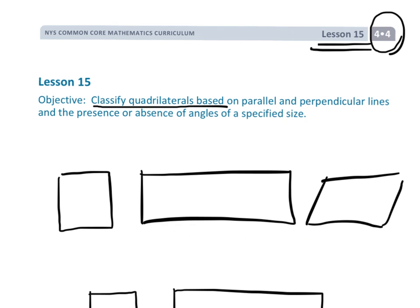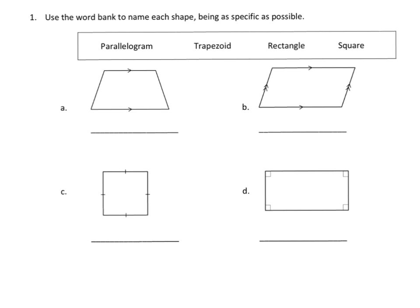So let's get started. So first, we're going to do a little bit of practice. It says, use the word bank to name each shape, being as specific as possible. And that's the idea that sometimes some figures could have two different names. We could classify the same figure in more than one way. But we're going to try and be as specific as possible.